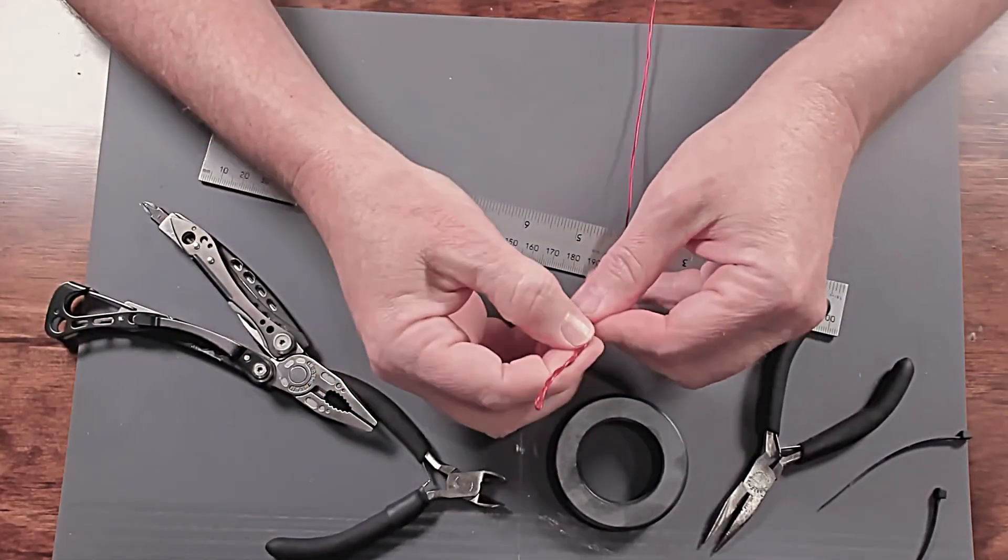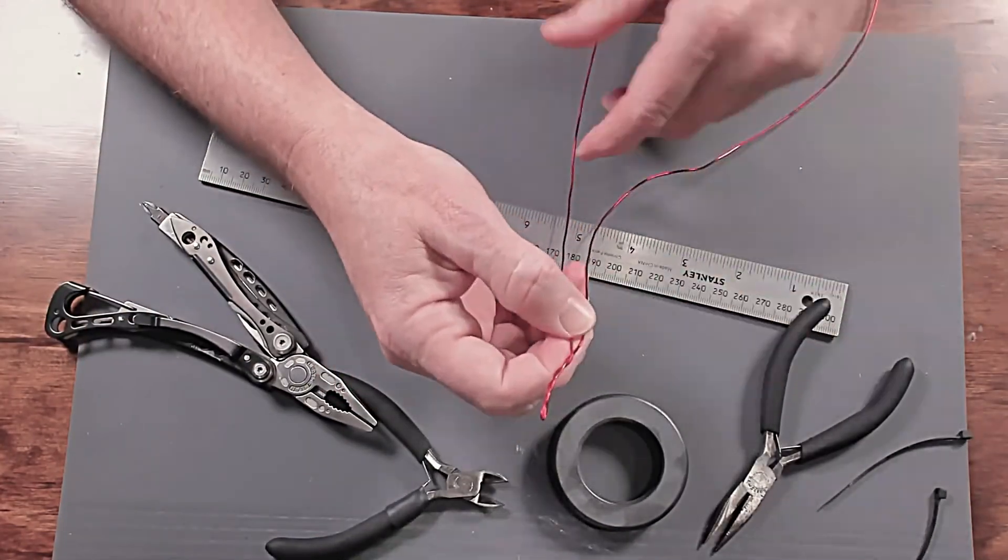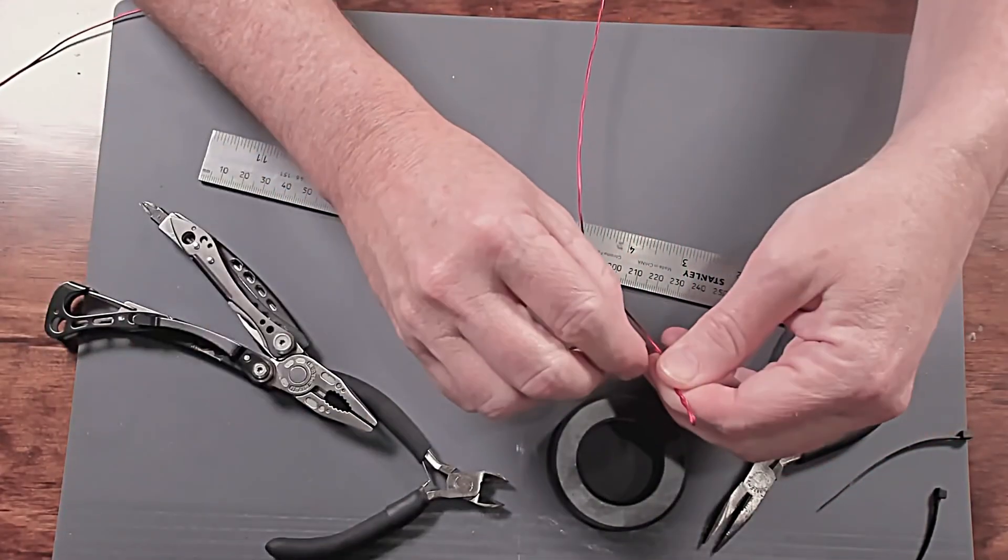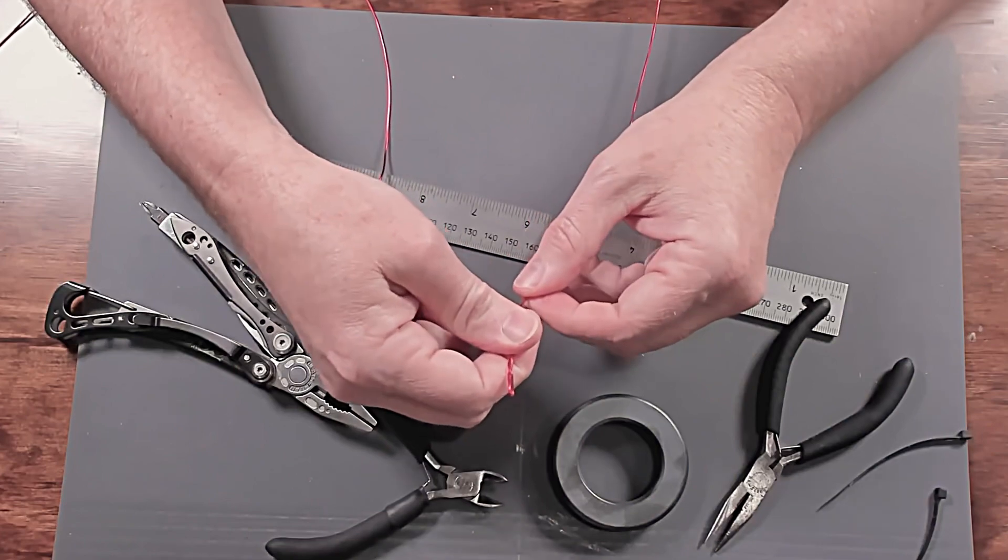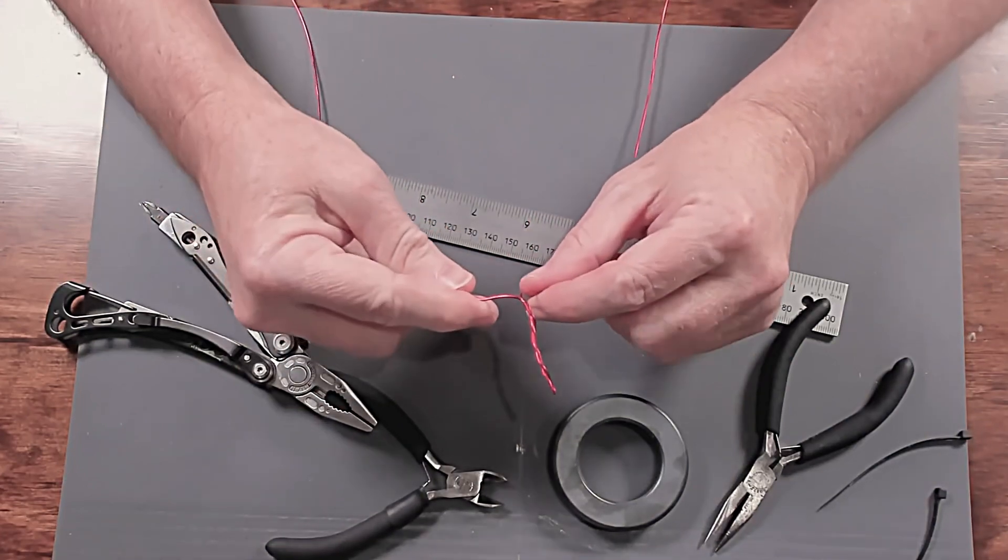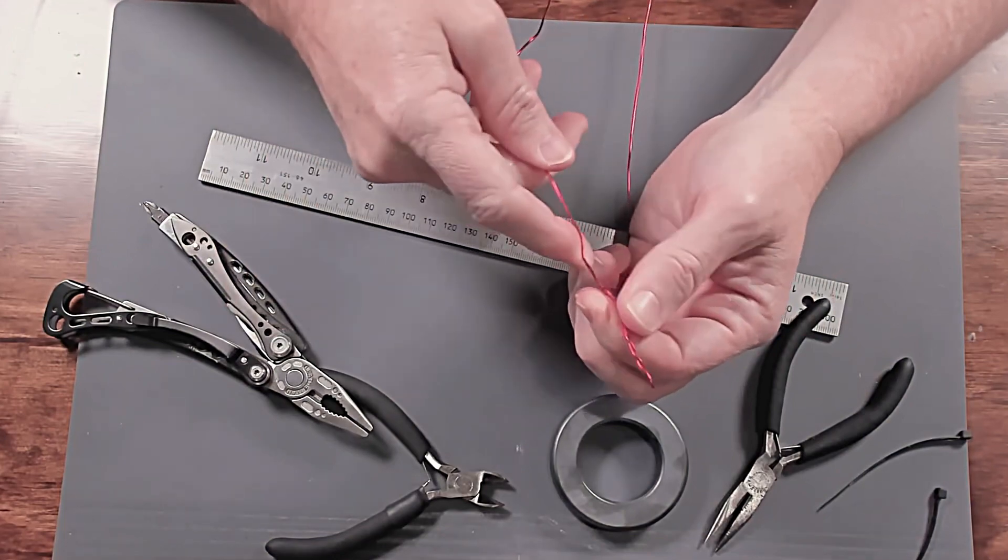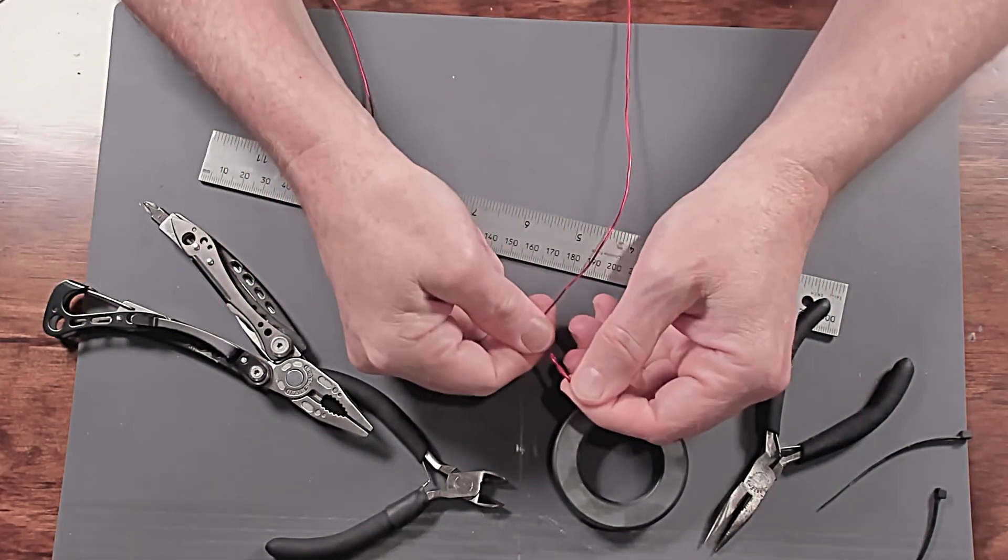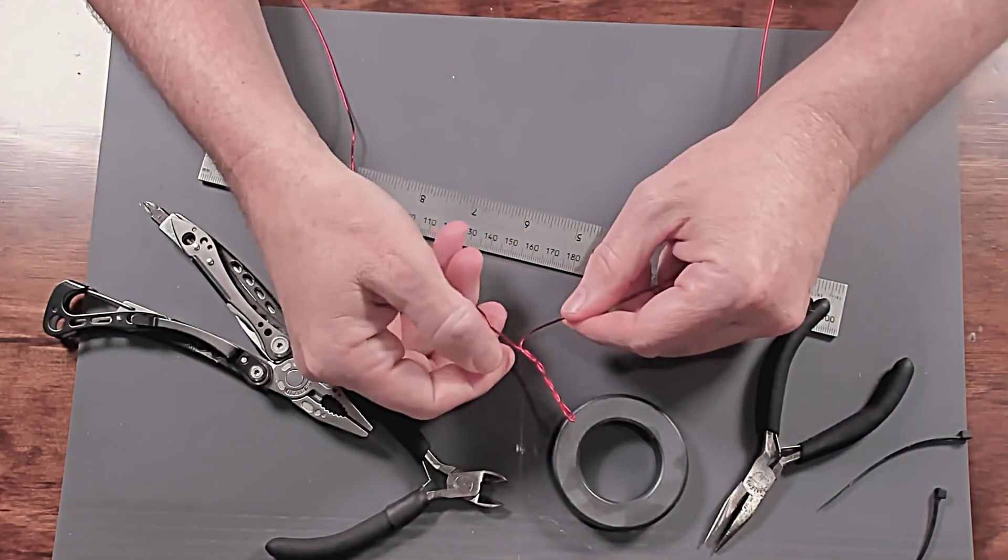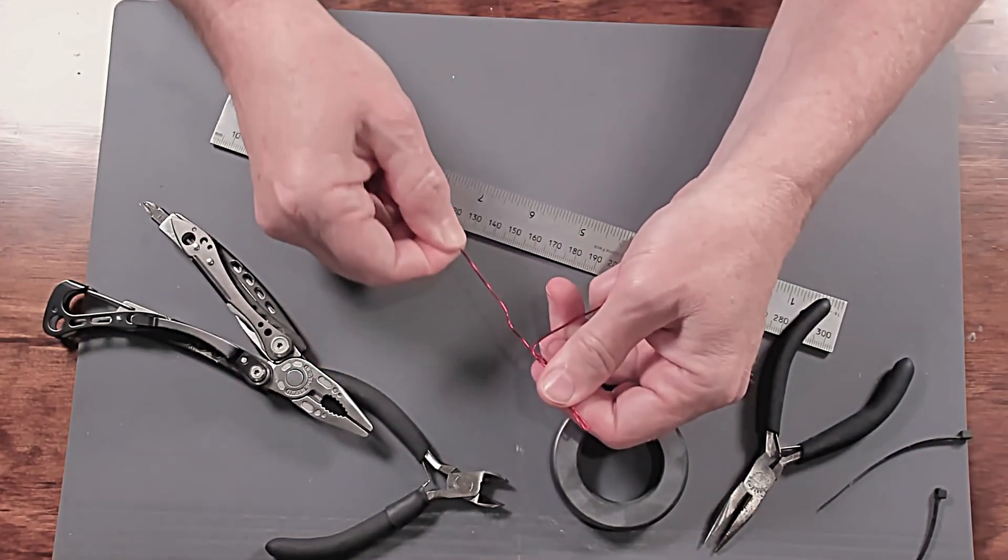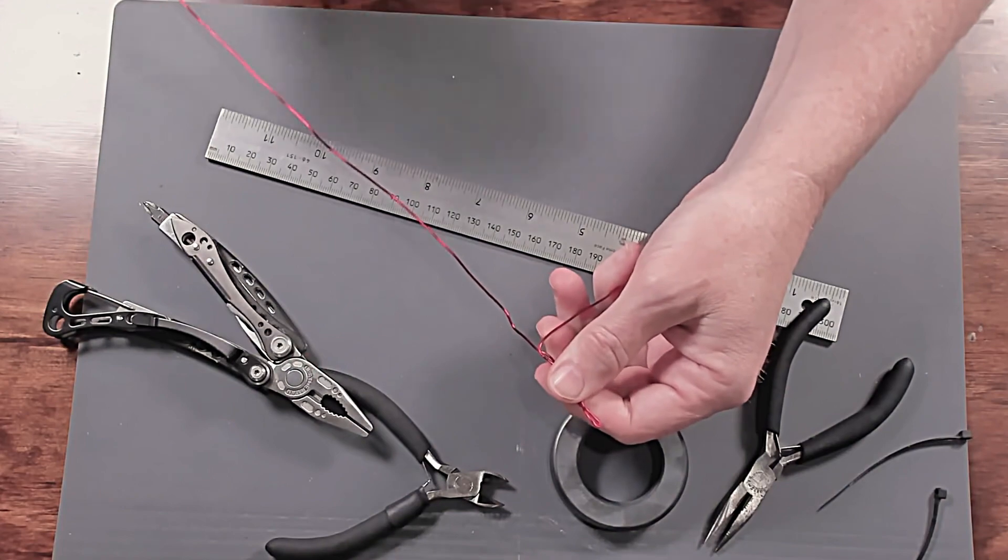The last thing we want to do is we want to take the long end and put a 90 degree bend in it, just like that. Let me show you how this looks. I've got my twisted section. I've got my long wire coming off 90 degree bend to the right and my short wire coming straight out the back.